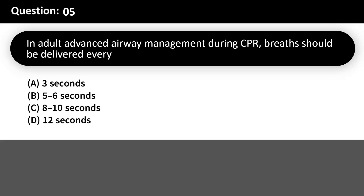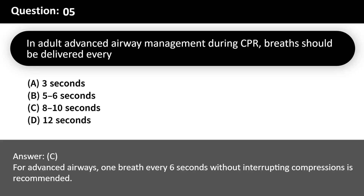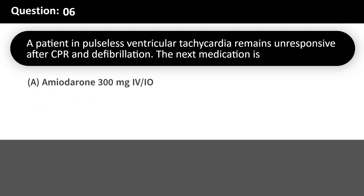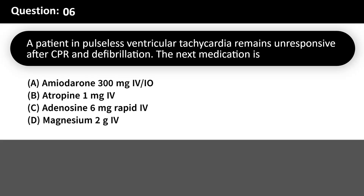Atropine 1mg IV is the first-line drug for symptomatic bradycardia. In adult advanced airway management during CPR, breaths should be delivered every: A. 3 seconds. B. 5-6 seconds. C. 8-10 seconds. D. 12 seconds. Answer: C. For advanced airways, one breath every 6 seconds without interrupting compressions is recommended.